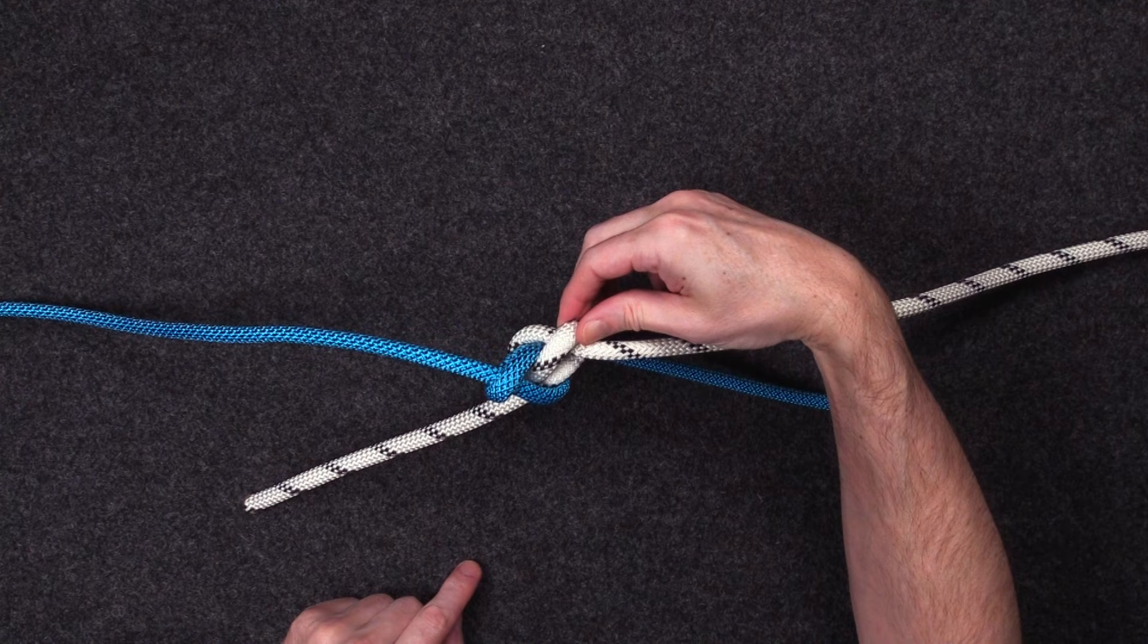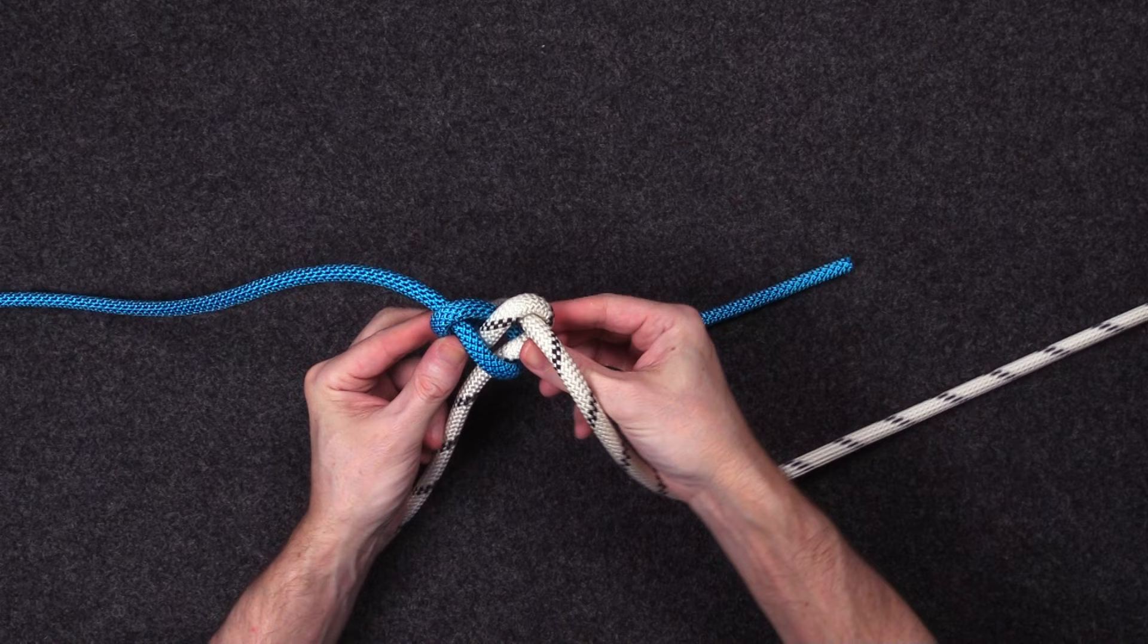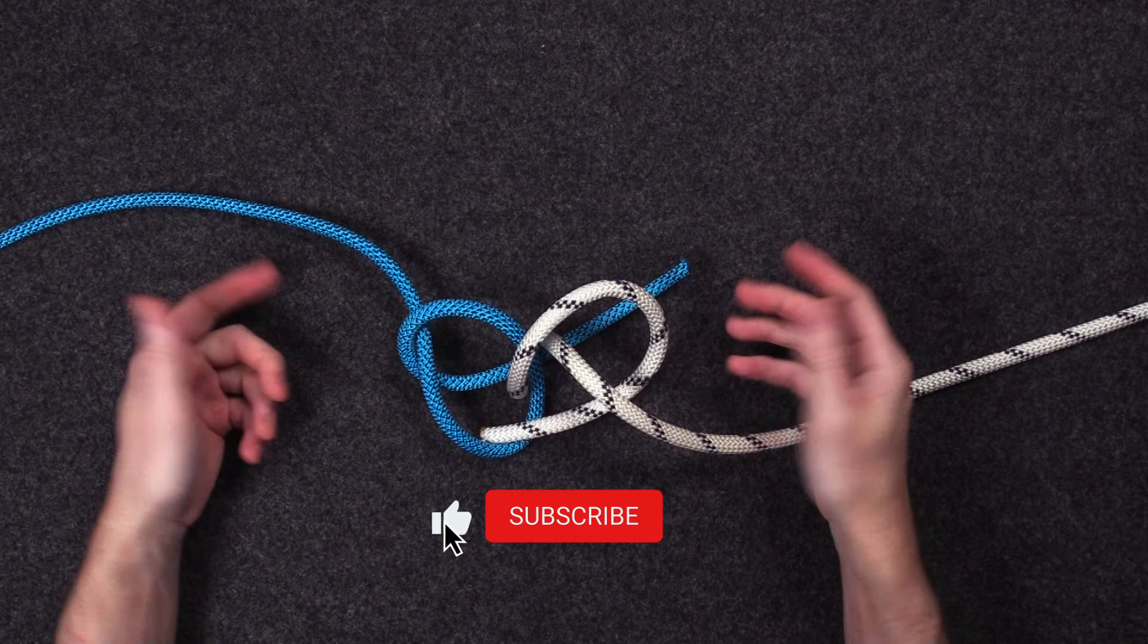To pull the Carrick Bend apart, just look for these bars that come off the working parts and start to pinch them together. So that was the deliberately capsized but quite secure Carrick Bend.